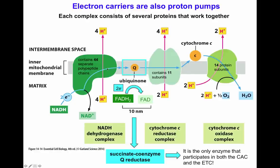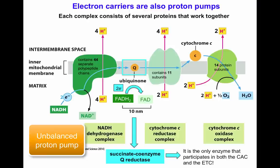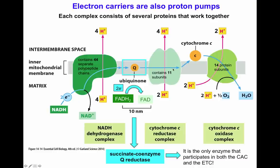Ubiquinone is a soluble electron carrier that can shuttle electrons back and forth between the two complexes. Ubiquinone donates its two electrons to the cytochrome C reductase complex. An interesting feature of the cytochrome C reductase complex is that it is an unbalanced proton pump — it can take the two protons of the ubiquinone molecules through a series of reactions called the Q cycle. The electrons given by ubiquinone allow the pumping of four protons into the intermembrane space, while two protons come inside. That is why it is called an unbalanced proton pump.